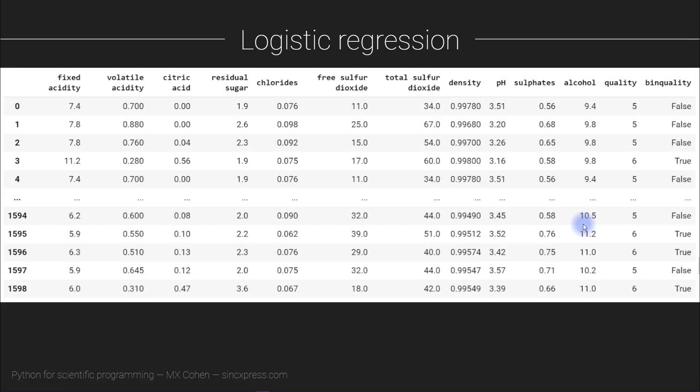We are going to perform a logistic regression on this dataset. The main distinction between a multiple regression and logistic regression is that with multiple regression the dependent variable has multiple different values, like quality. With logistic regression you are predicting a variable that takes on only two values — true or false, present or absent, pass or fail, or get the mortgage versus not.